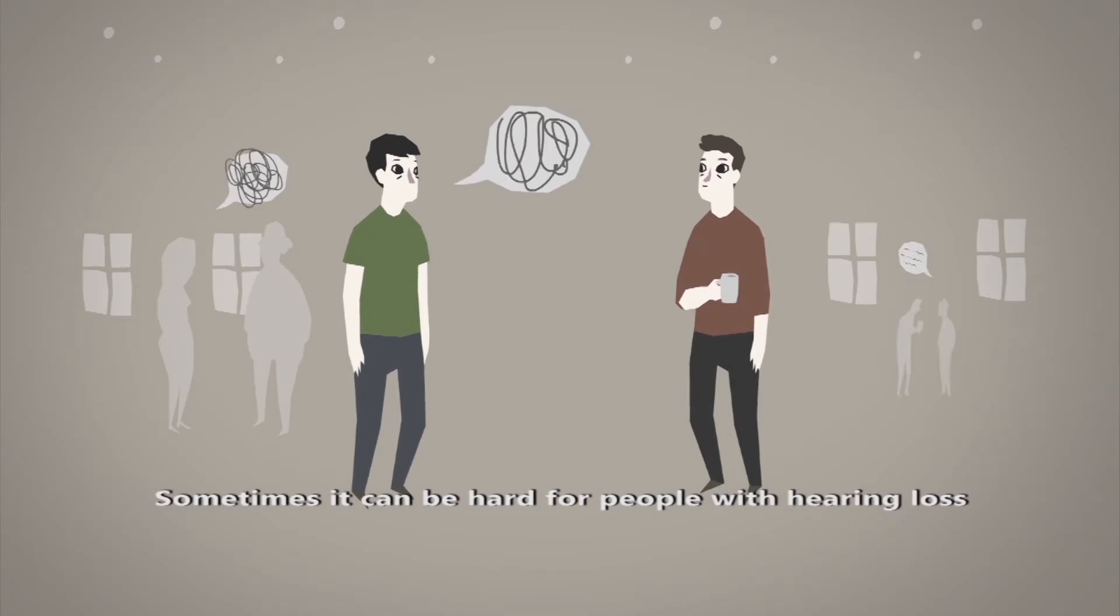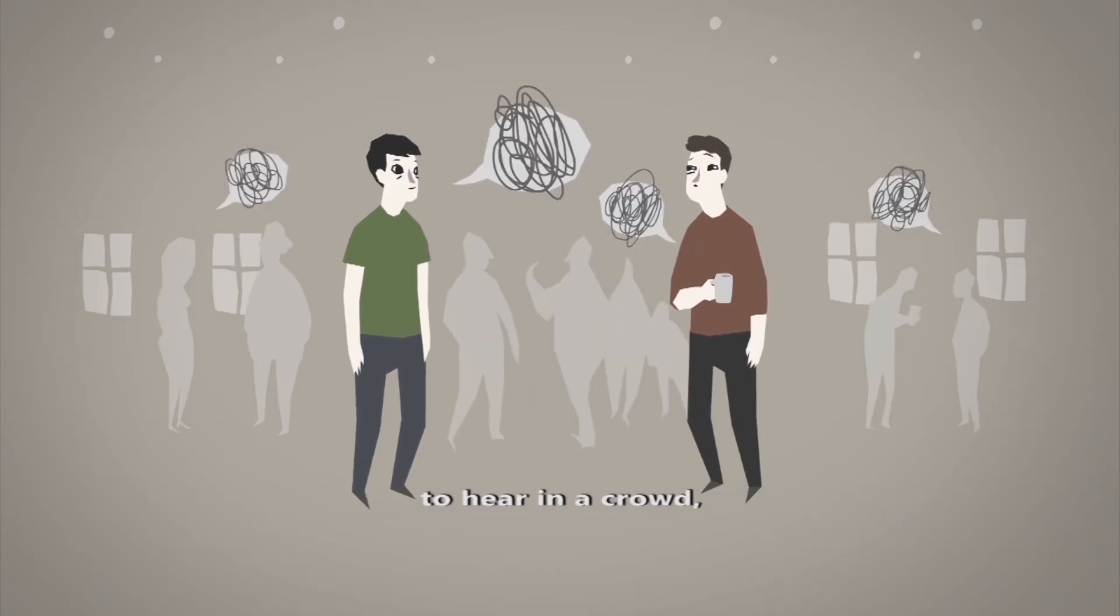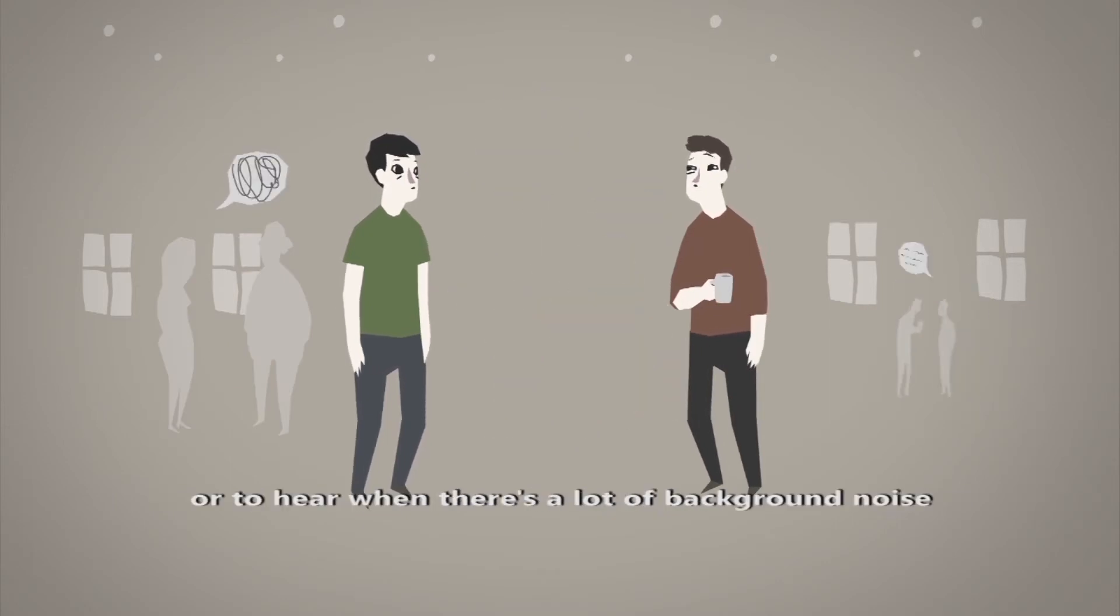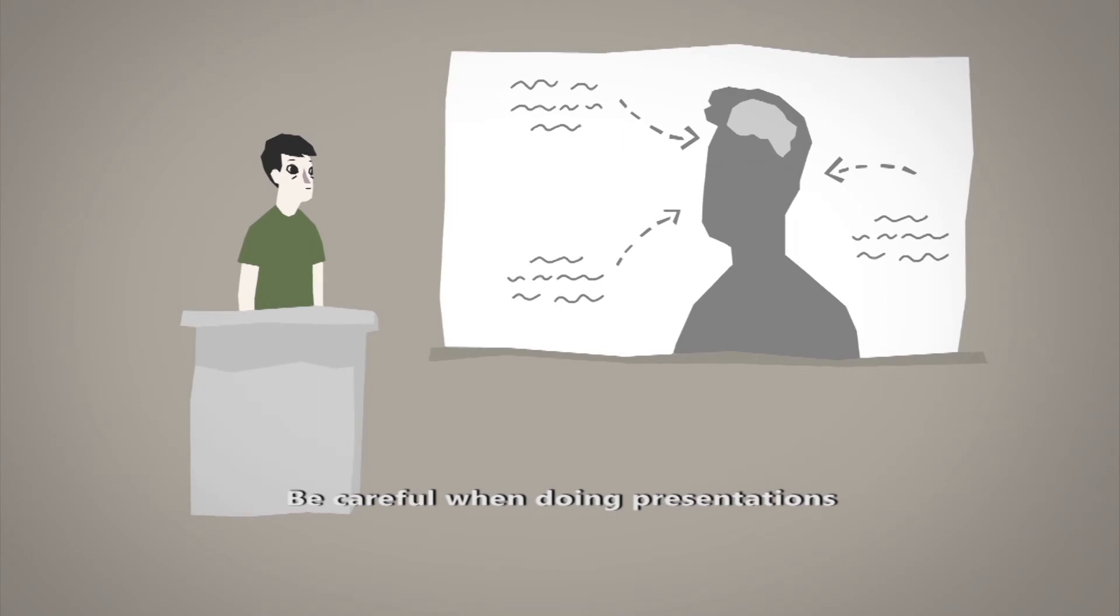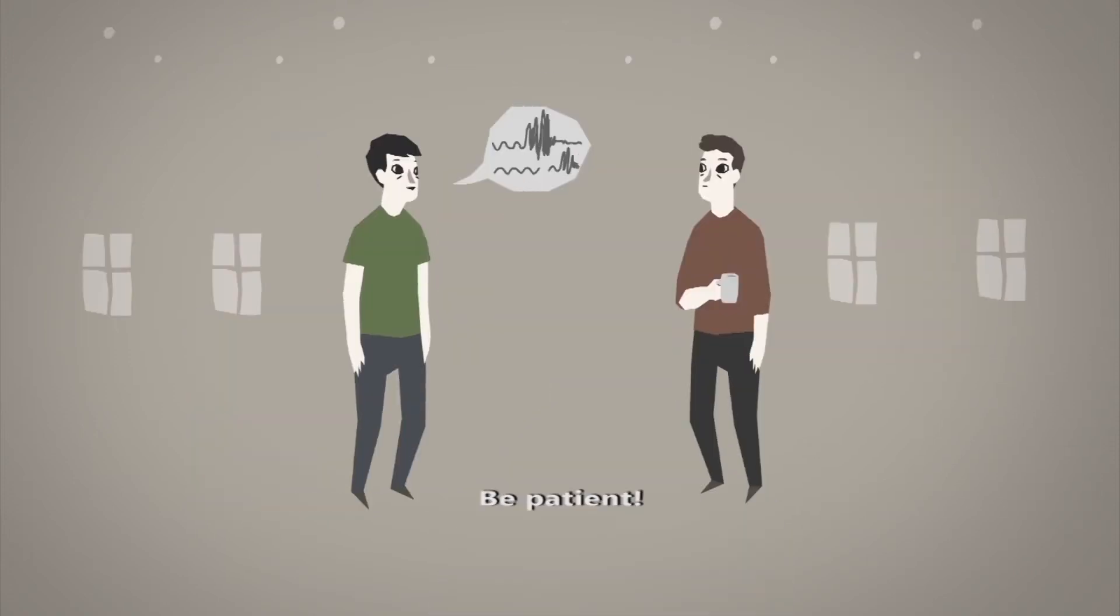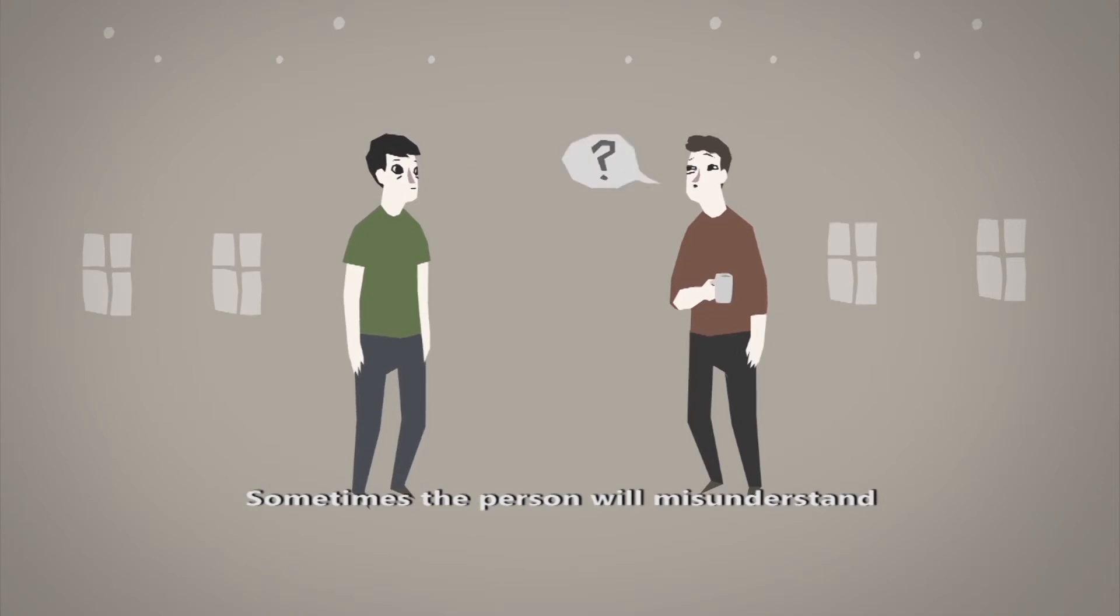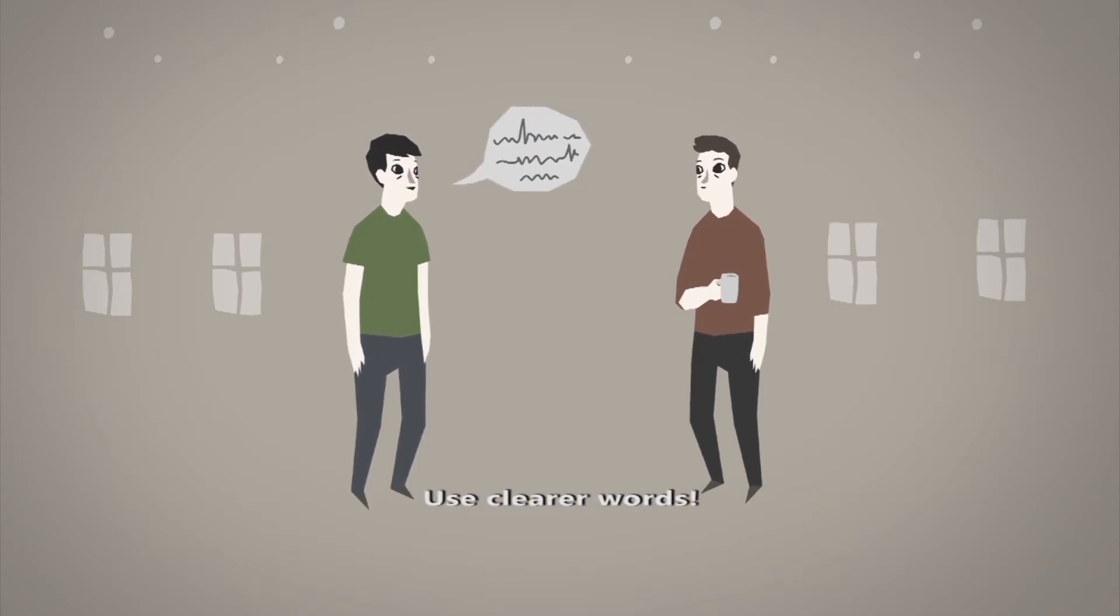Sometimes it can be hard for people with hearing loss to hear in a crowd, or to hear when there's a lot of background noise. Try to talk to them where it's quieter. Be careful when doing presentations or when working with screens or computers. Once again, try to keep your face in view when you're speaking. Be patient. Sometimes the person will misunderstand what you're saying. Say it in a different way. Use clearer words.